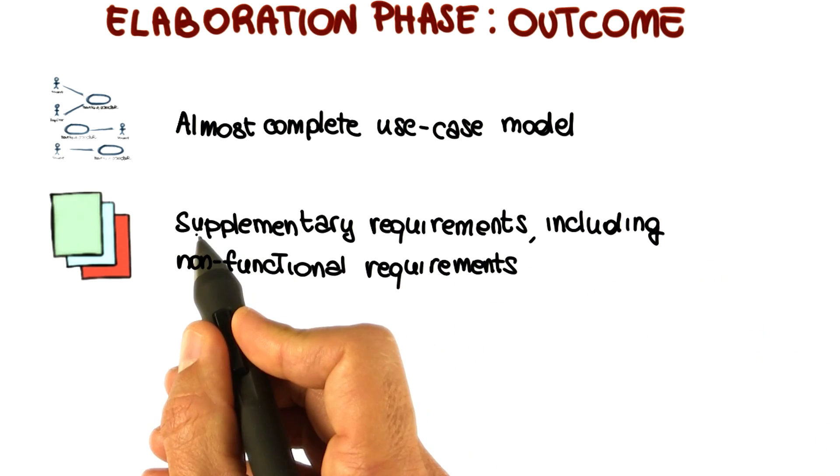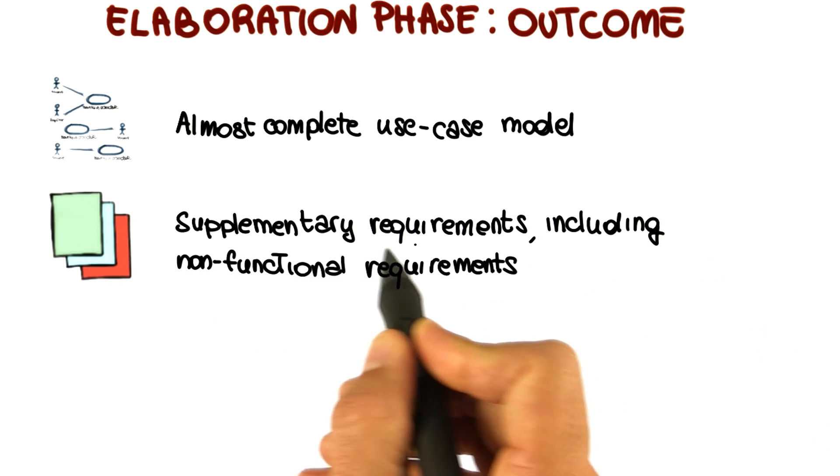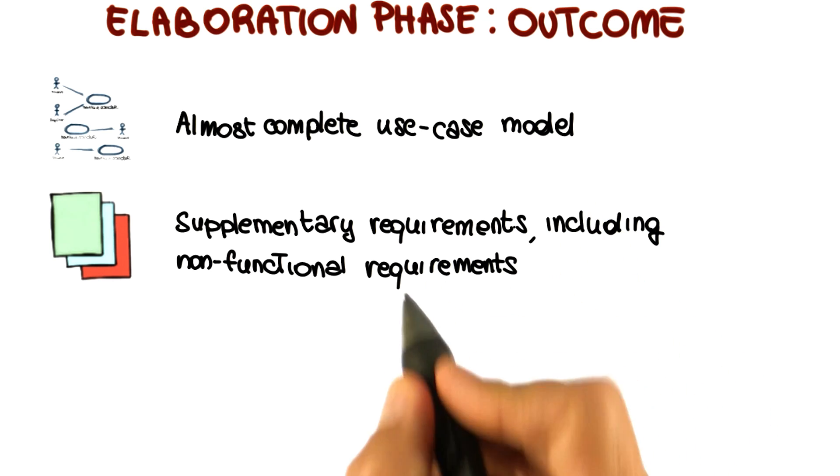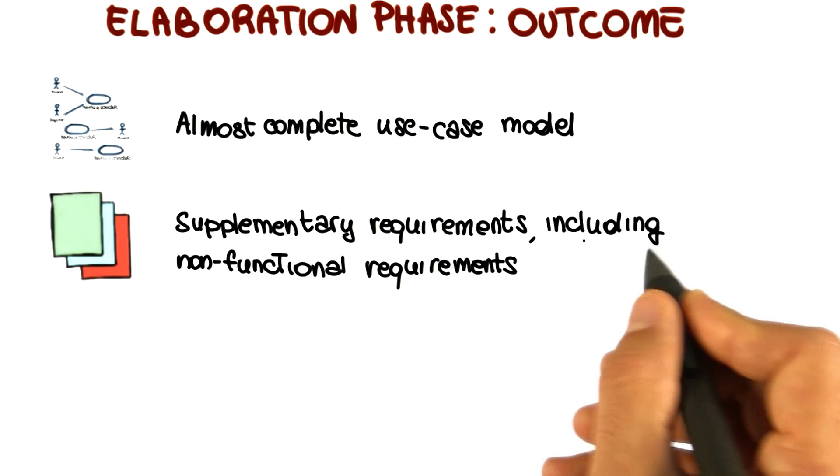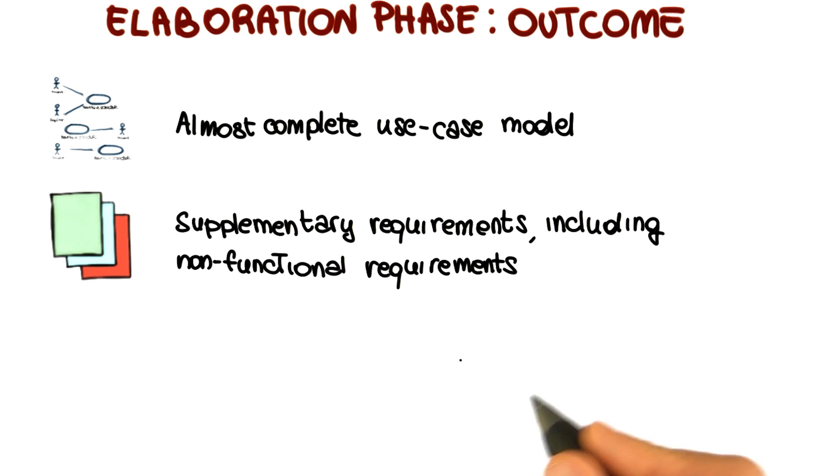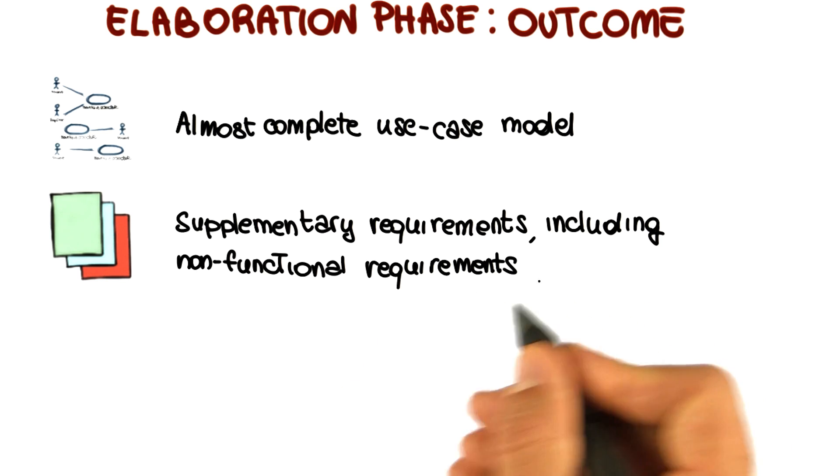As part of this phase, we also identify a set of what we call supplementary requirements. These are basically all the requirements that are not associated with the use case. This set includes in particular non-functional requirements, such as security, reliability, maintainability, and so on—all the ones that are relevant for the system that you're developing.